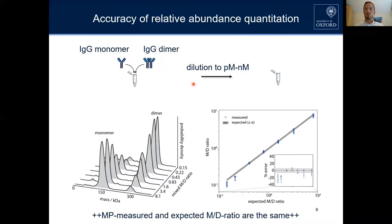Prior to measurement, we diluted them again down to picomolar or nanomolar concentration. You can see the outcome of these experiments here, showing the molecular weight axis where the typical mass of 150 kDa is the IgG monomer and 300 kDa is the IgG dimer, for different mixed ratios of monomer and dimer.